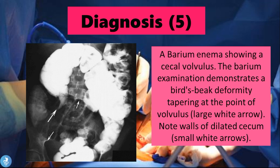Another diagnostic tool is the barium enema. The barium examination demonstrates a bird's beak deformity, tapering at the point of the volvulus, as seen with the large white arrow. At the point of the twist, barium is unable to fill that area, creating the bird's beak appearance — a helpful diagnostic finding in cecal volvulus. The dilated walls of the cecum are also noted.